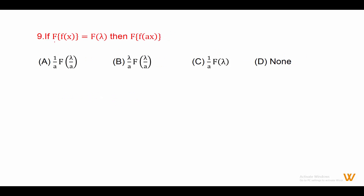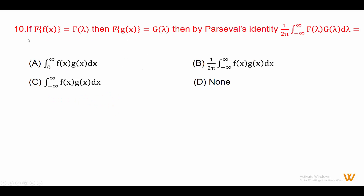Nine: if the Fourier transform of fx is F(lambda), then the Fourier transform of f(ax) is equal to 1 upon a times F(lambda upon a). Answer is option A.